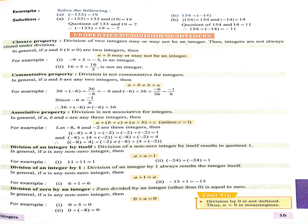Now next property: division of an integer by 1. Division of an integer by 1 always results in the integer itself. हम किसी भी integer को 1 से divide करते हैं तो हमारा same integer ही answer आता है। Here are two examples: 6 divided by 1 — our quotient is 6. Second: minus 13 divided by 1 — our quotient is minus 13.